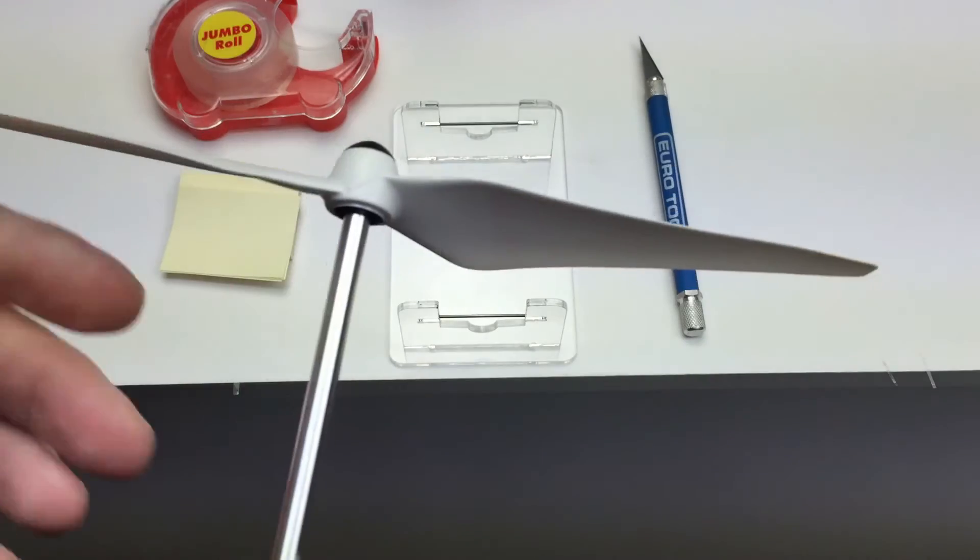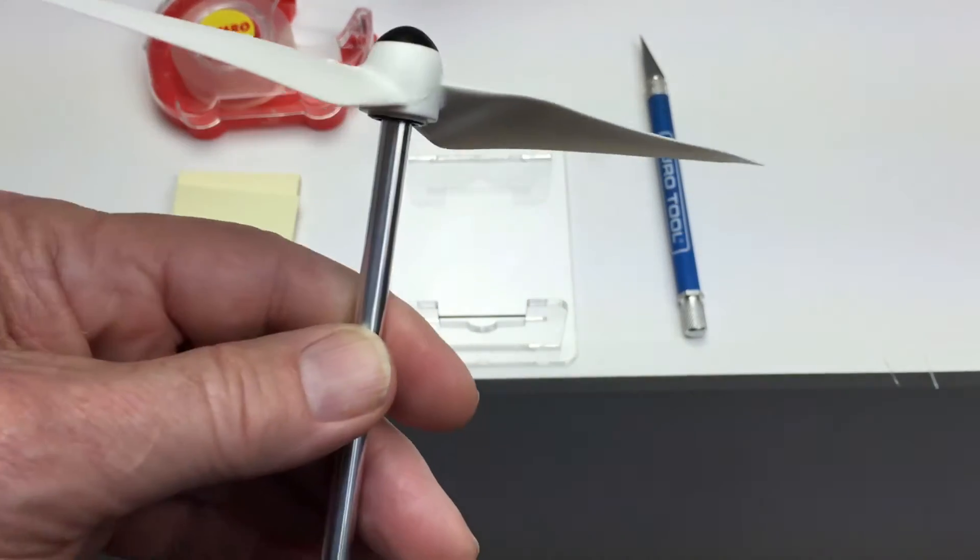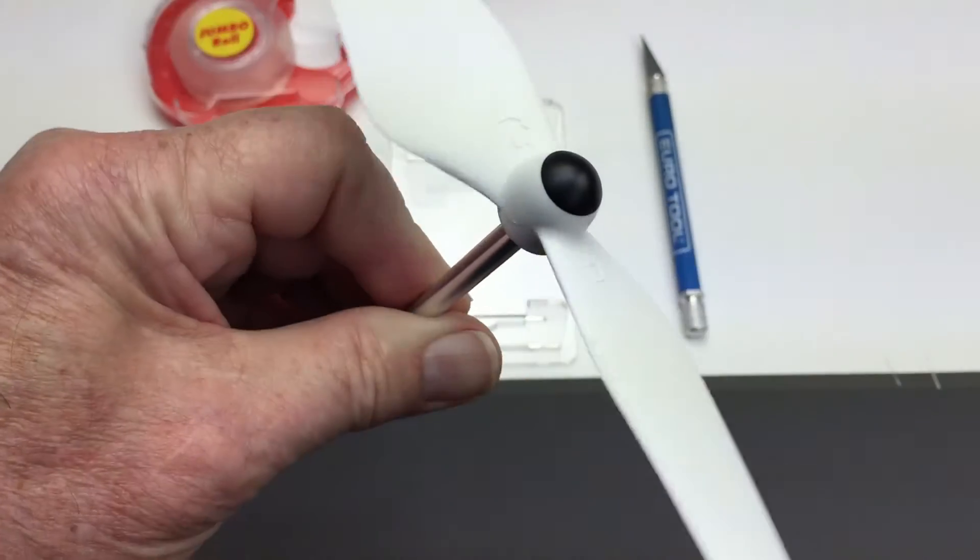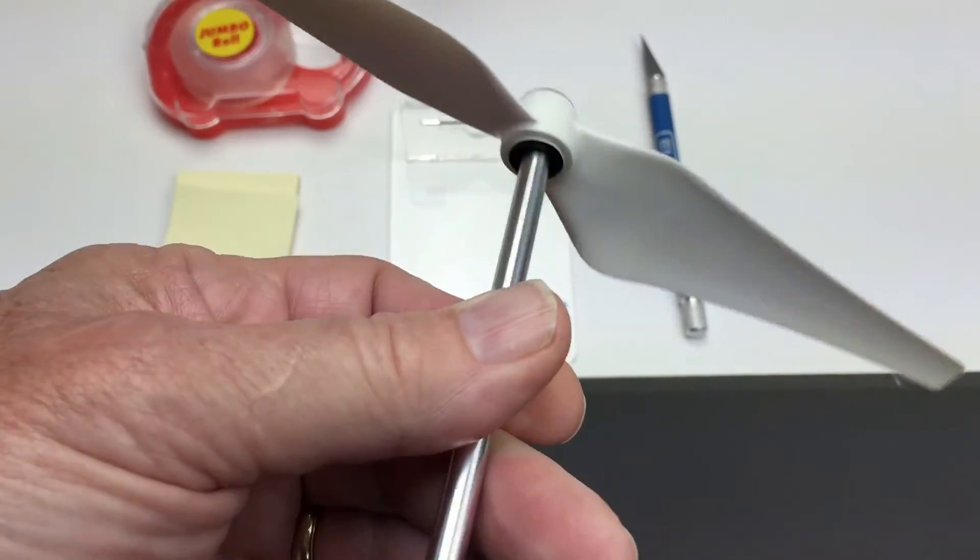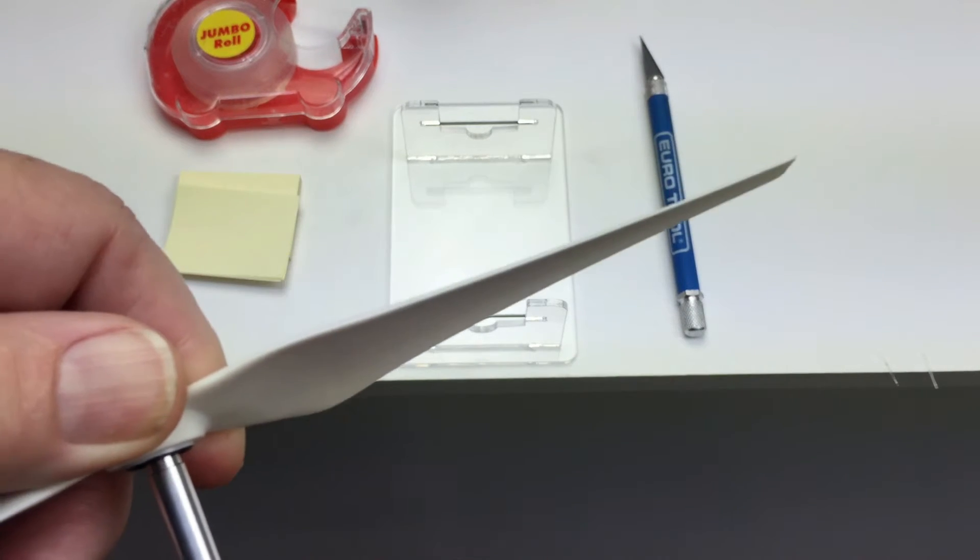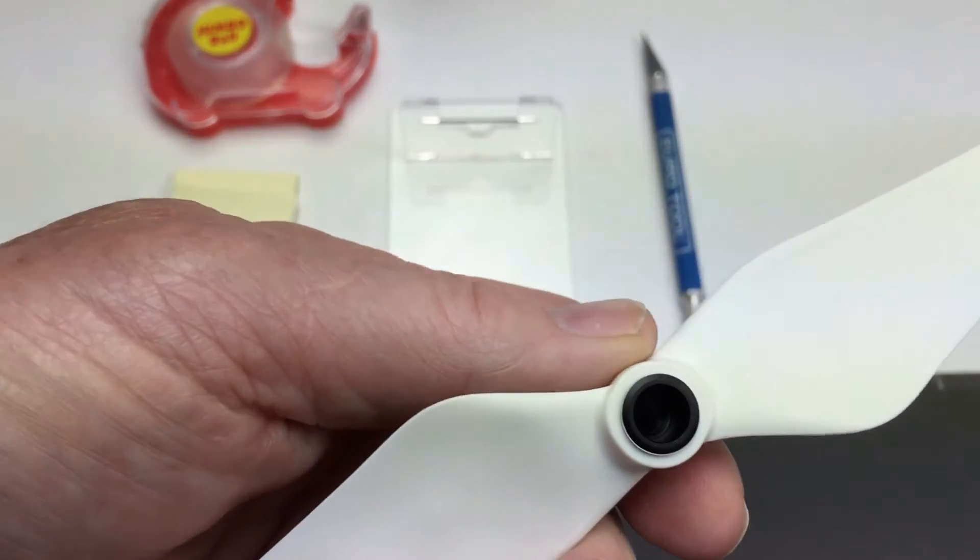This video shows the instructions on how to use this speedy prop balancer. It's primarily designed for props that have hubs on them, mostly for quadcopters. The props that have no hubs don't have holes in them like conventional props do.